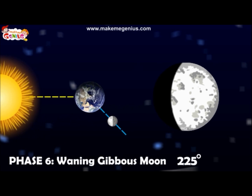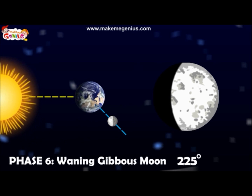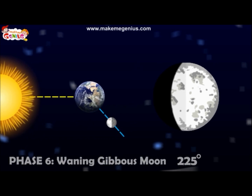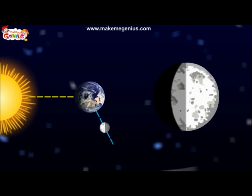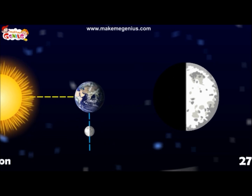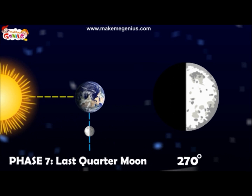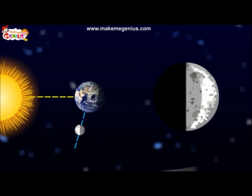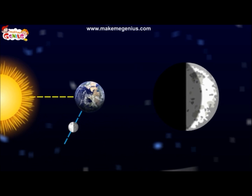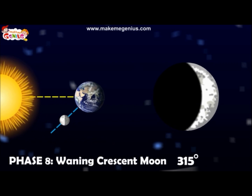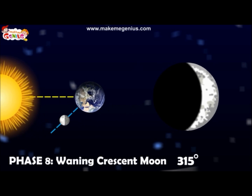Phase 6 is the waning gibbous moon. The moon is waning, that is decreasing, going from full moon to quarter moon. Phase 7 is the last quarter — the moon appears half lit again. Phase 8 is the waning crescent moon. This is the last phase before the next new moon.